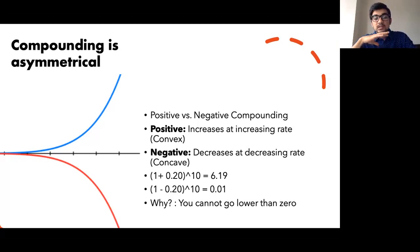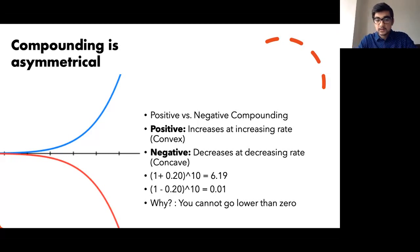So now once we've established this, how does it affect our investments, our portfolio, our stocks, and how can we go about looking at compounding from a completely different lens? So let's assume that we have in our portfolio two stocks. One stock gives me positive 26% returns. The other stock gives me negative 26% returns every year. And I put 50% in both stocks. If I have a hundred rupees, I put 50 in stock A, which gives me positive 26%. And I put 50 rupees in stock B, which gives me negative 26%.